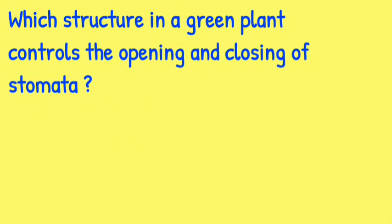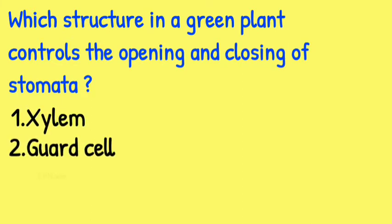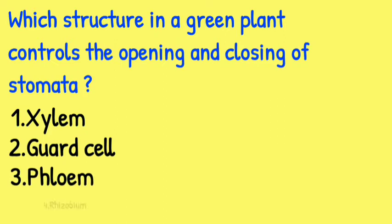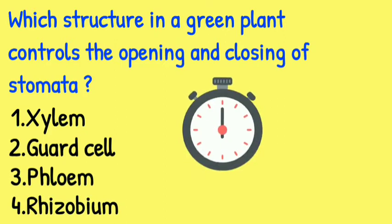Which structure in a green plant controls the opening and closing of stomata? The options are: Xylem, Guard cell, Phloem, and Rhizobium. Your time starts now!